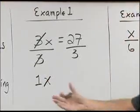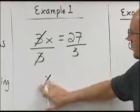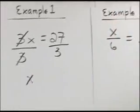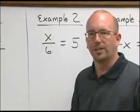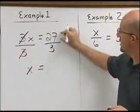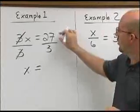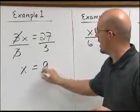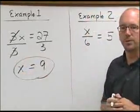Since we understand that a variable with no coefficient or no number in front of it has the 1, we can simply bring that down as x. Our equal sign comes down and then simply 27 divided by 3. And 27 divided by 3 is 9. x is equal to 9.